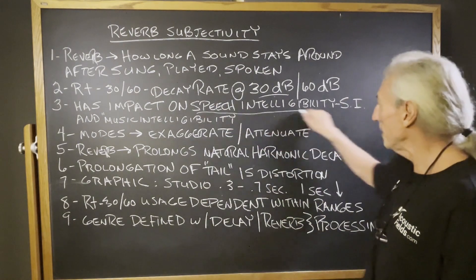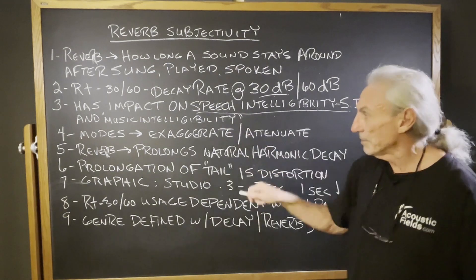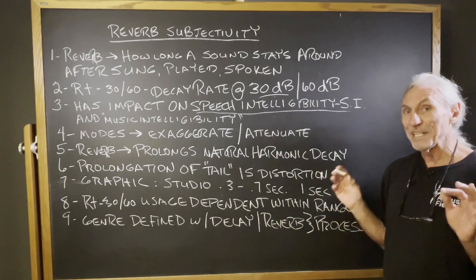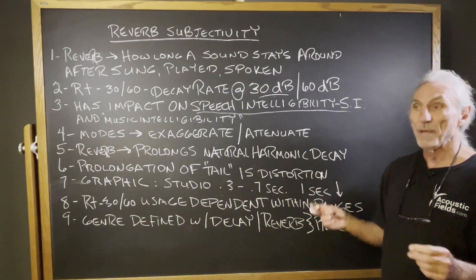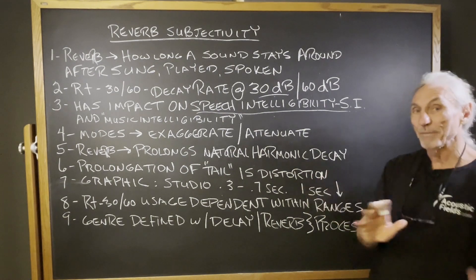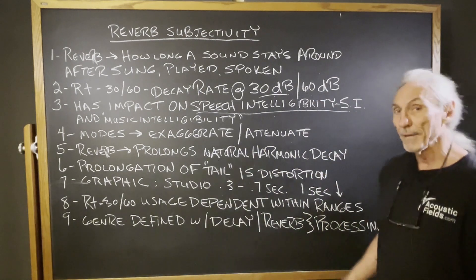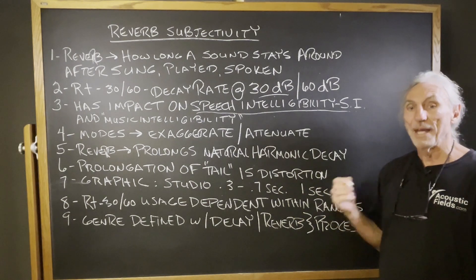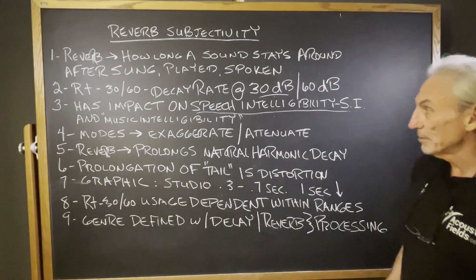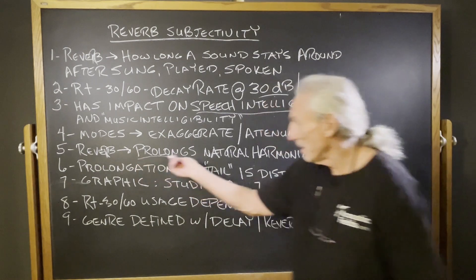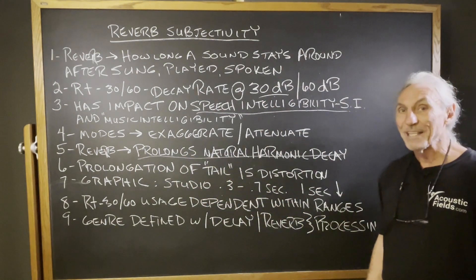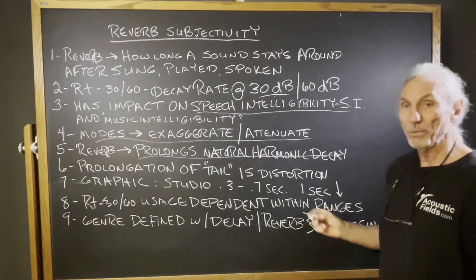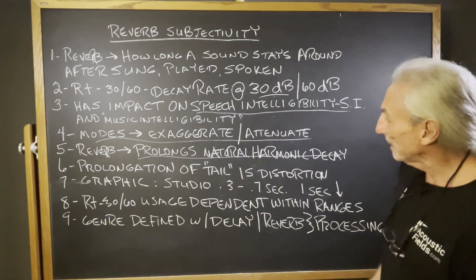Now why do we do that? Because it has an impact on speech intelligibility (SI), and I'm going to call it music intelligibility — it's not a real index, but I want you to get a feel for what we're doing here. We have a certain speech intelligibility index in this room where I'm doing videos. If we played music in the room, it would be completely different. We don't have a separate index for music, but we do for voice. So basically we want to find the range where sound stays around and gives us intelligibility at the same time. Reverb prolongs the natural harmonic decay of our notes and our ability to hear the fundamental and the harmonic. We also have certain modes which can exaggerate and attenuate the situation too, so all of this has to be considered.